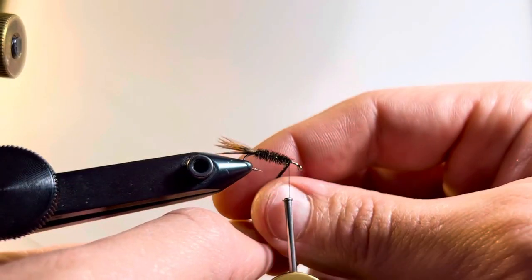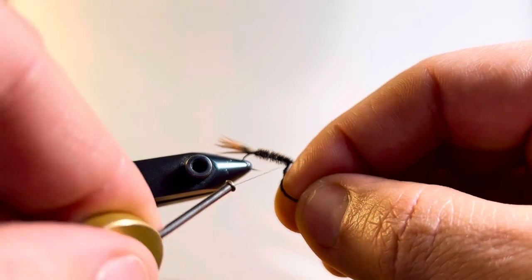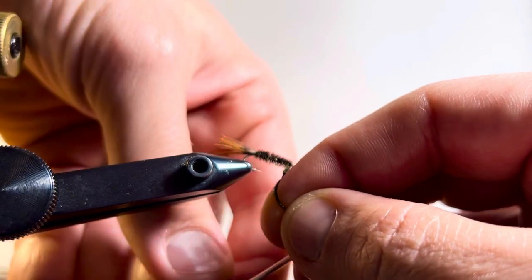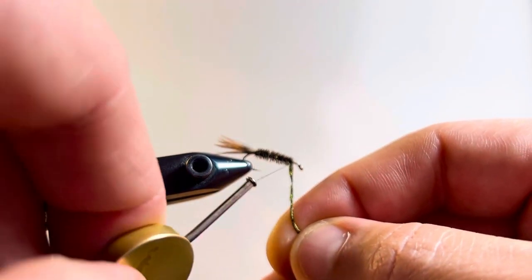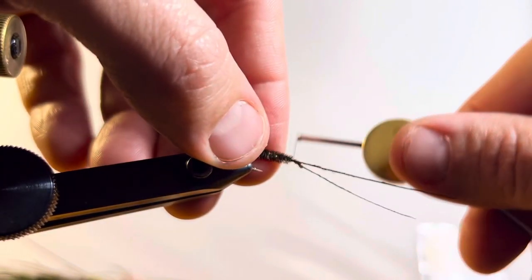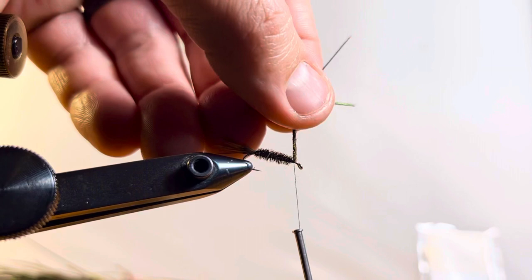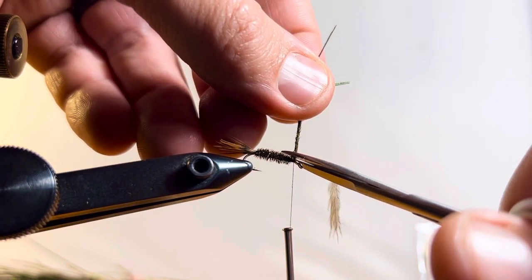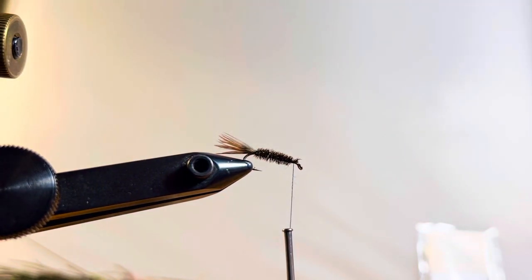If it suggests peacock herl that's a great one to use. And if it doesn't it's still a great one to substitute for dubbing or yarn or anything else. Get creative with it. Find ways to make it successful in the patterns that you are trying out. There we are. We'll trim off the excess right there. And there we've got our underbody.